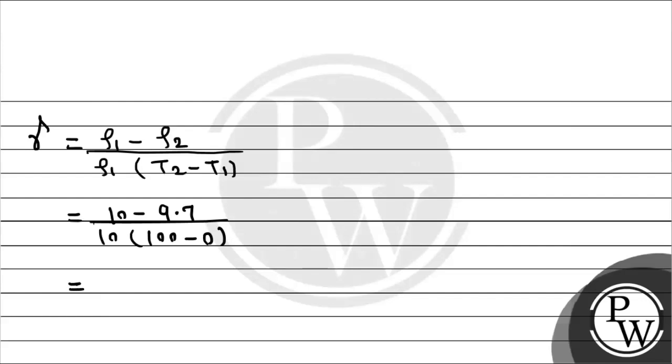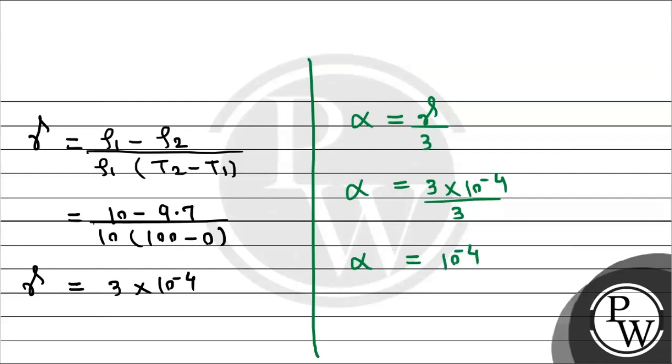If you simplify it, gamma equals 3 times 10 to the power minus 4. But as per the question, we need to find the coefficient of linear expansion, alpha, which is given by the formula gamma divided by 3. So this equals 3 times 10 to the power minus 4 divided by 3. The 3 cancels out. The coefficient of linear expansion is 10 to the power minus 4.